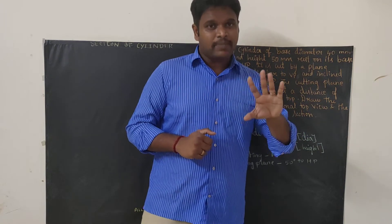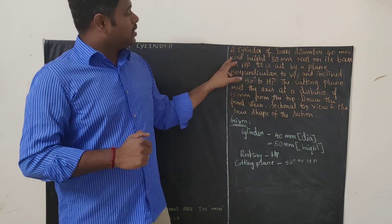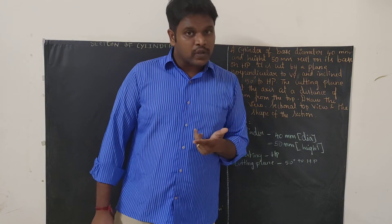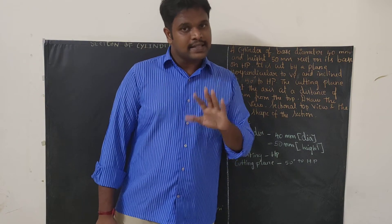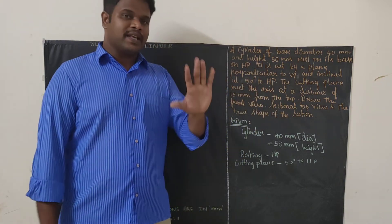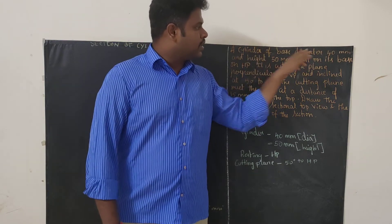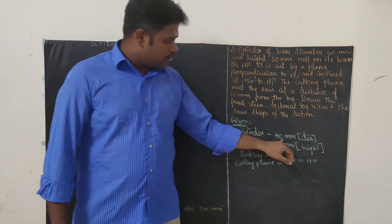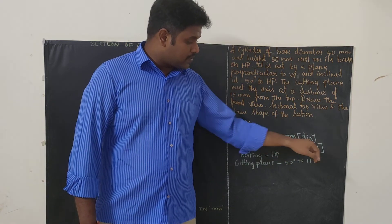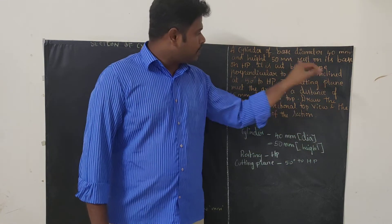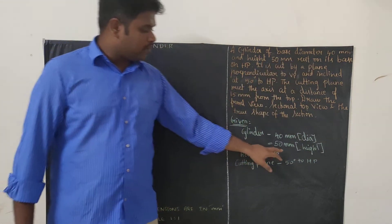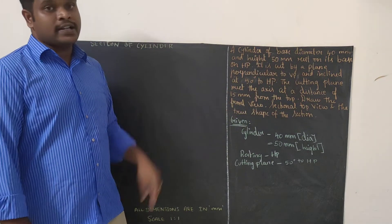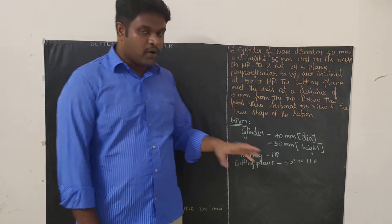A cylinder of base diameter 40 mm — cylinder means the base diagram will be a circle with diameter 40 mm. The height of the cylinder will be 50 mm. It rests on its base, so resting will be on the HP.